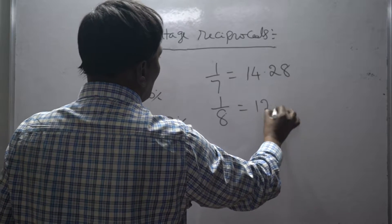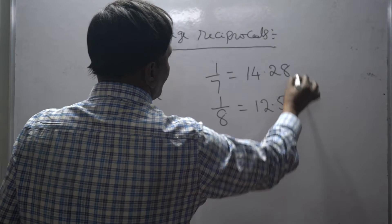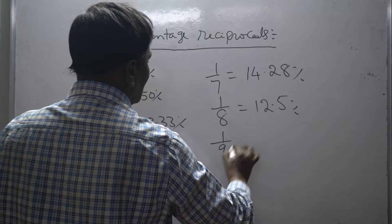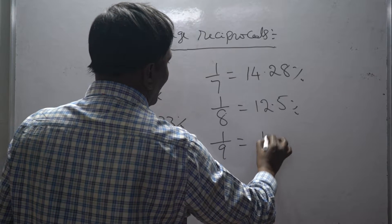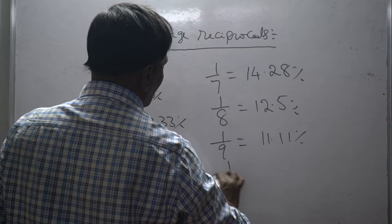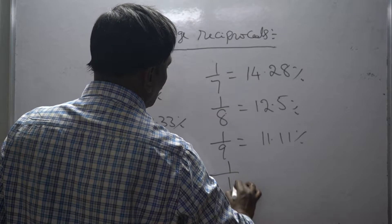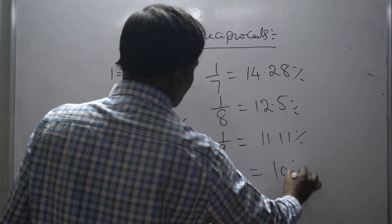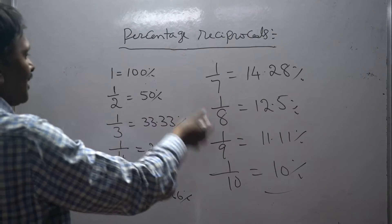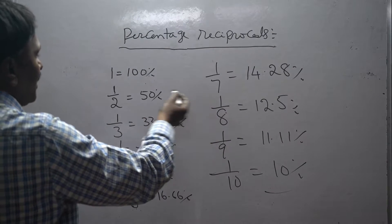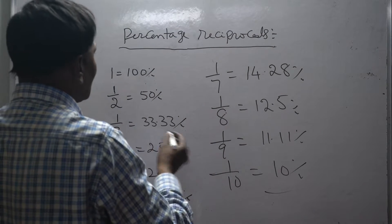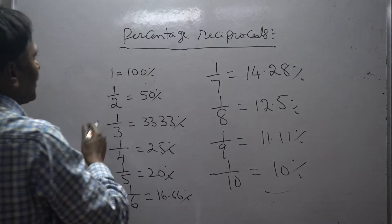1 by 7 is equal to 14.28 percentage. 1 by 8 is equal to 12.5 percentage. 1 by 9 is equal to 11.11 percentage. 1 by 10 is equal to 10 percentage. If you remember these values, we can solve percentage problems easily.